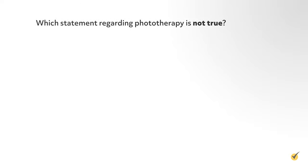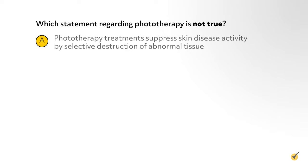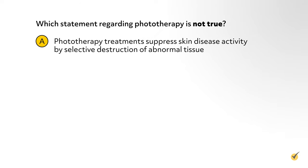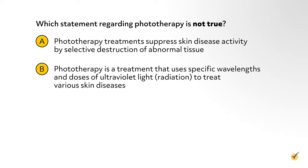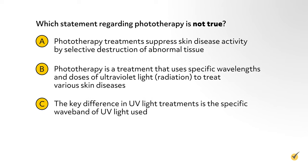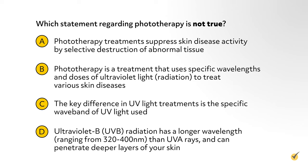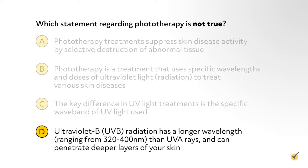Question 2: Which statement regarding phototherapy is not true? A. Phototherapy treatments suppress skin disease activity by selective destruction of abnormal tissue. B. Phototherapy is a treatment that uses specific wavelengths and doses of ultraviolet light or radiation to treat various skin diseases. C. The key difference in UV light treatments is the specific waveband of UV light used. D. UV-B radiation has a longer wavelength ranging from 320 to 400 nanometers that reaches only the outer layer of the skin. If you chose D, you are correct. UV-B radiation utilizes shorter wavelengths ranging from 290 to 320 nanometers that reach only the outer layer of the skin.